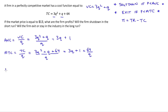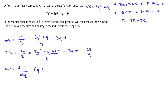I'll also find marginal cost, which is just the derivative of our total cost function with respect to quantity. For 3Q squared, we bring the 2 out in front: 3 times 2 gives us 6Q. The derivative of Q is just 1, and the derivative of a constant is 0. So marginal cost equals 6Q plus 1.